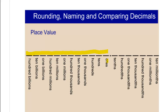Our pattern is always going to be 1, 10, 100, and then we just have to keep up with what we're dealing with. So for example, 1, 10, 100 is just the hundreds. And then we are dealing with thousands: 1,000, 10,000, 100,000.